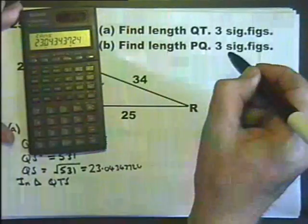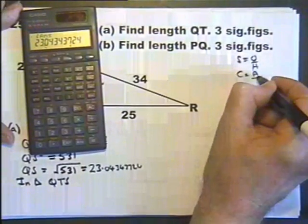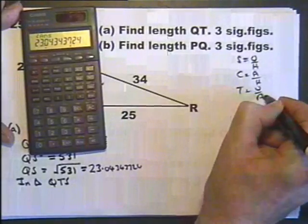So I can use the trig ratios. Sine equals opposite over hypotenuse, cosine equals adjacent over hypotenuse, tangent equals opposite over adjacent.